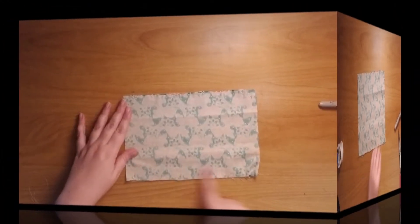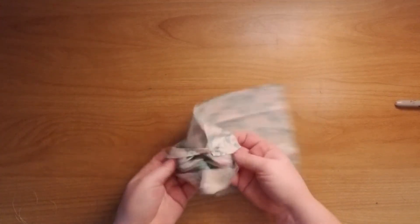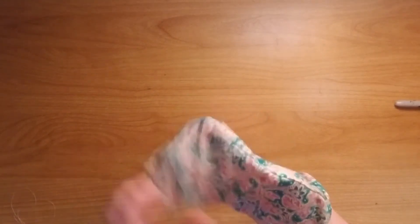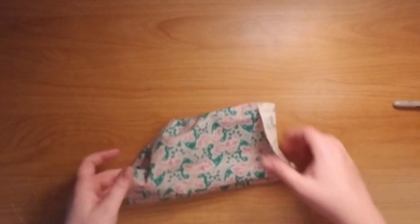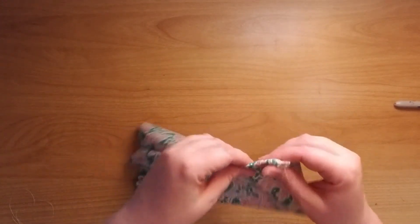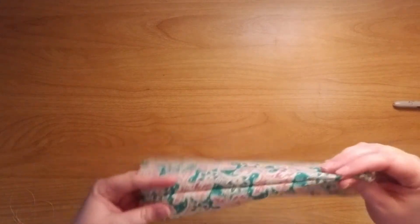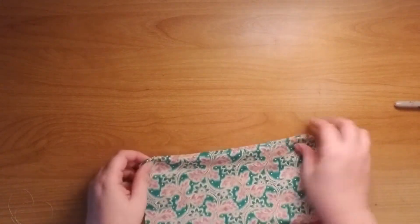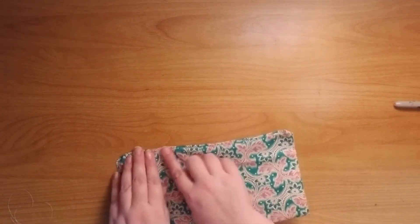Now that I've sewn both of the long sides, I'm going to turn my mask inside out, or right side out. And you can press your seam, or if you want to just kind of take your finger, kind of flatten it out for your next step.